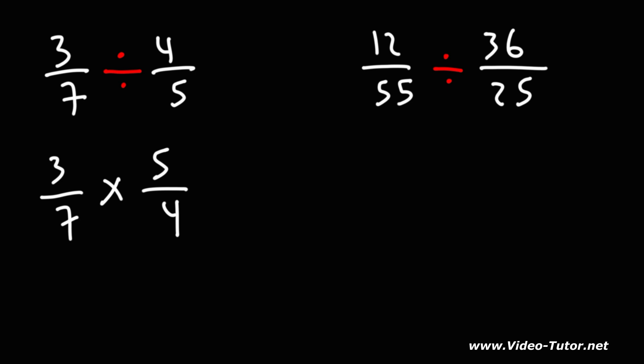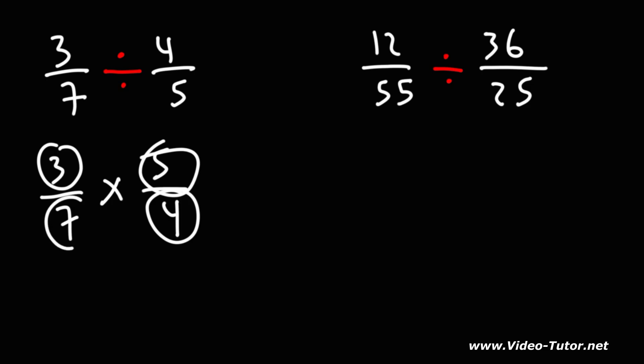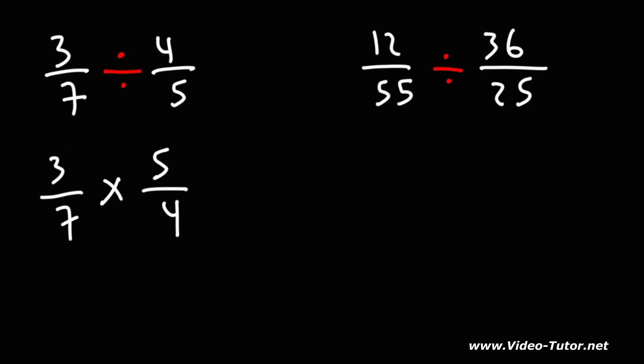Before you multiply across, it's good to check to see if the numbers in the fractions have any common factors. 3, 4, 5, and 7 don't have any common factors, so we can just go ahead and multiply across.